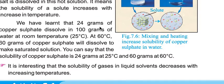We have learned that 24 grams of copper sulphate dissolves in 100 grams of water at room temperature. At 60 degrees centigrade, 60 grams of copper sulphate will dissolve to make a saturated solution. It is interesting that the solubility of gases in liquid solvents decreases with increasing temperature.